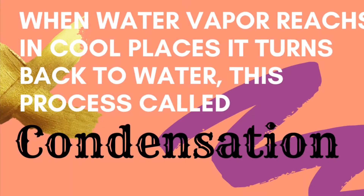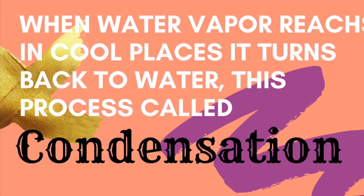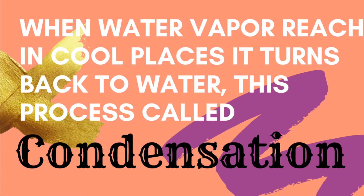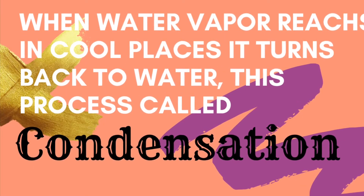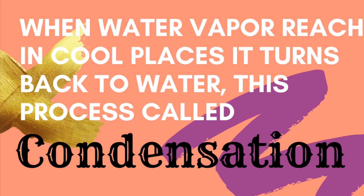Another way to say it: when water vapor reaches a cooler place and turns to water form again, it's called condensation. Precipitation — the drops become bigger and heavier. Due to Earth's gravitation, they fall down. That is called precipitation.